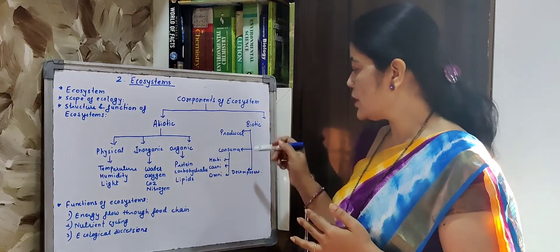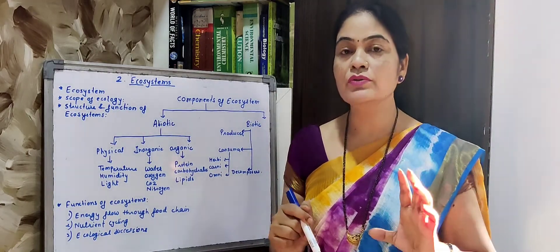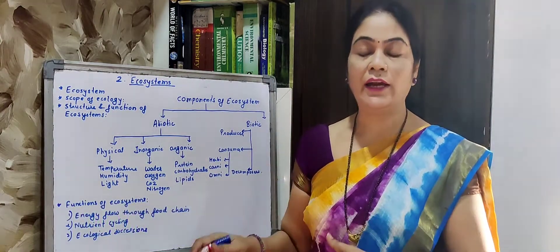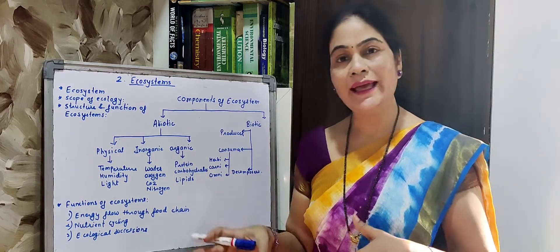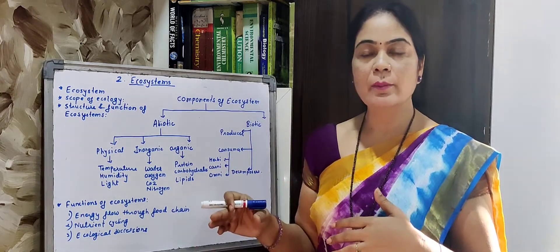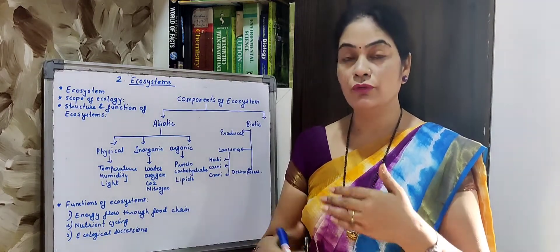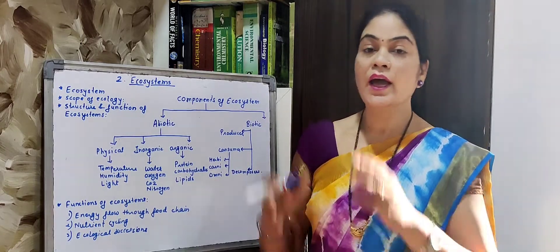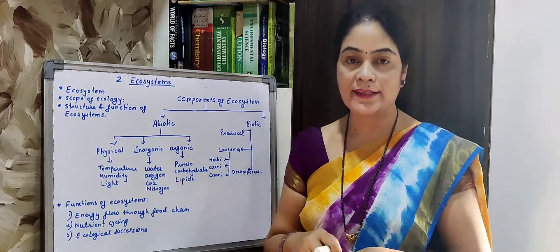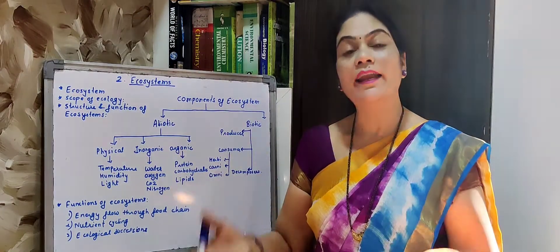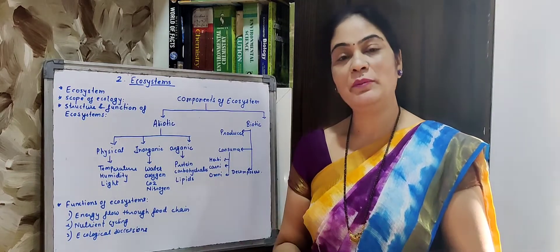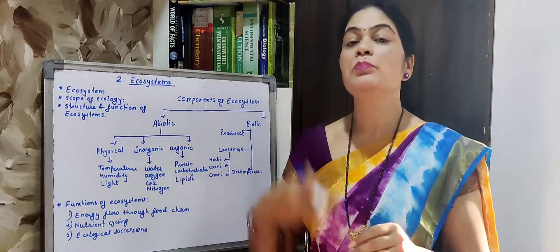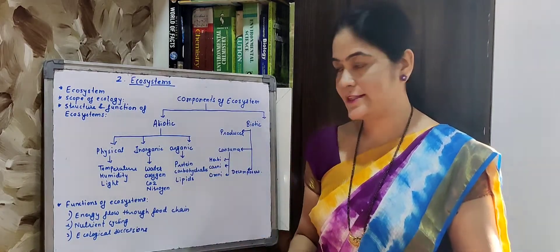Producer means those who produce. Who is producing? The plants — basically the green plants. In producer category, no animals are included. Producer means they are creating their own food, they are generating the food. We cannot generate our own food — we get food from the market and cook it, but we cannot make food ourselves without consuming anything. Producer produces their food by the process of photosynthesis. That is the producer.